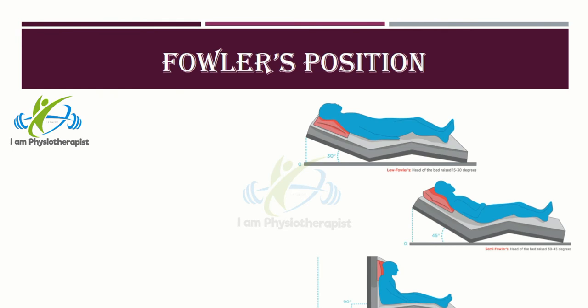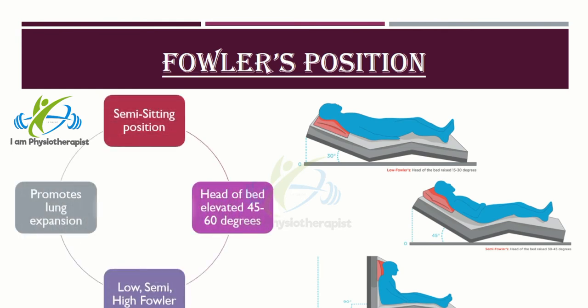Fowler's position, also known as semi-sitting position, is a bed position wherein the head of the bed is elevated 45 to 60 degrees. Variations include low Fowler's at 15 to 30 degrees, semi-Fowler's at 30 to 45 degrees, and high Fowler's which is nearly vertical. This position promotes lung expansion, because gravity pulls the diaphragm downward, allowing greater chest and lung expansion. It is used for patients who have difficulty breathing.